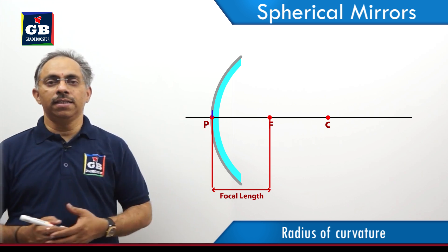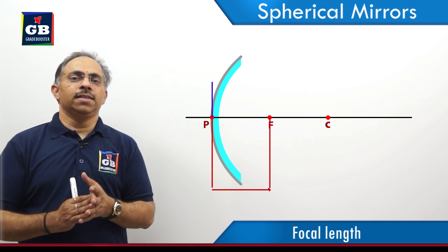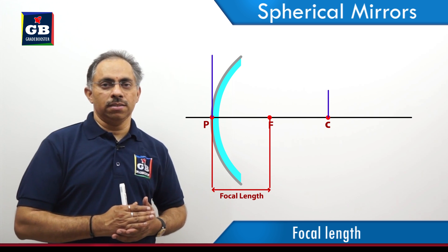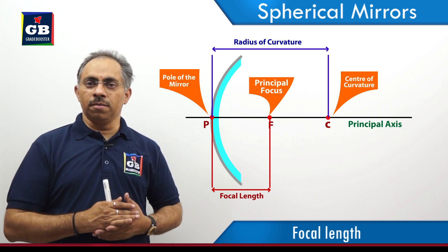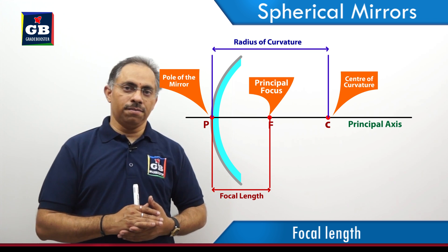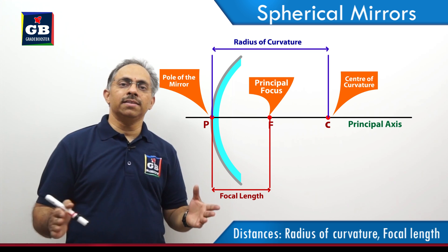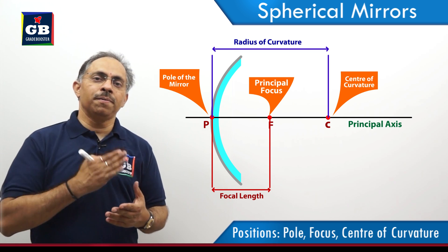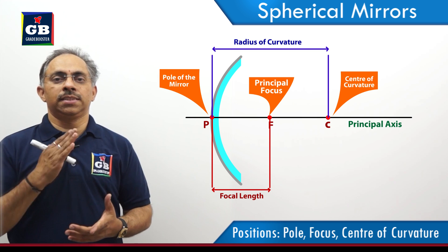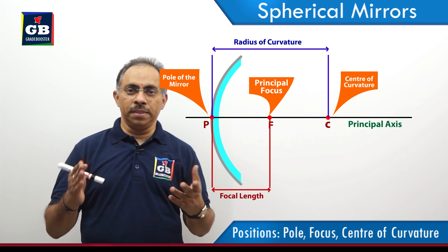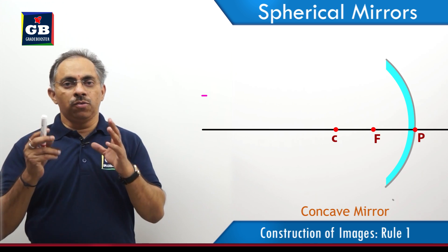The focal length is generally denoted by the small letter F. The distance between the center of curvature of the mirror — either concave or convex — to the pole of the mirror, we call the radius of curvature. These two are distances: radius of curvature and focal length. Whereas the principal focus, pole, and center of curvature are positions. The center of curvature and the principal focus lie on the principal axis, which is the line joining the center of curvature to the pole of the mirror.